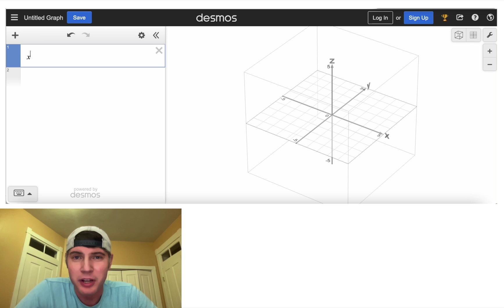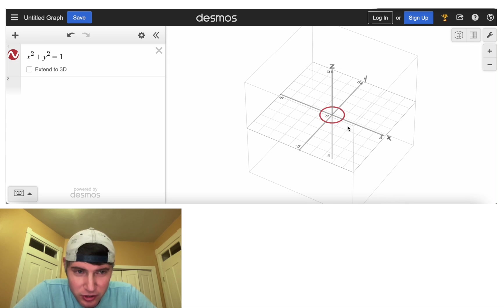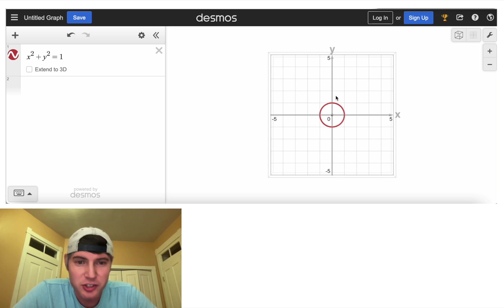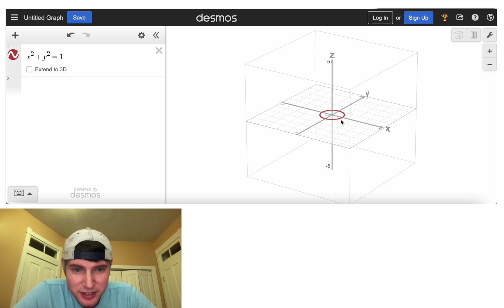First, let's do a circle with a radius of one. It'll be x² + y² = 1. And that gives us this circle right here. If we click right here, we can see it's a circle on the XY plane. And then when we look at X, Y, Z, it's just a circle on that XY plane.